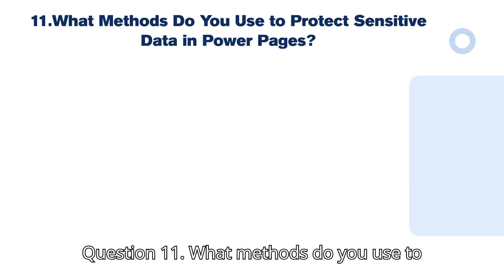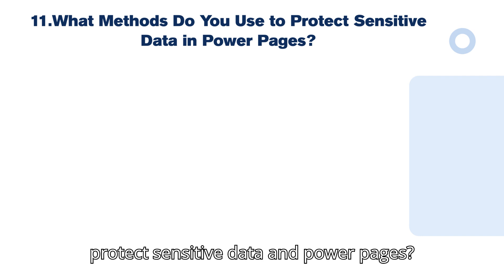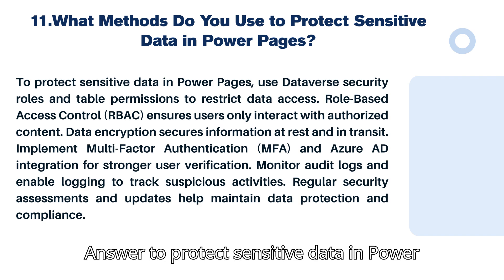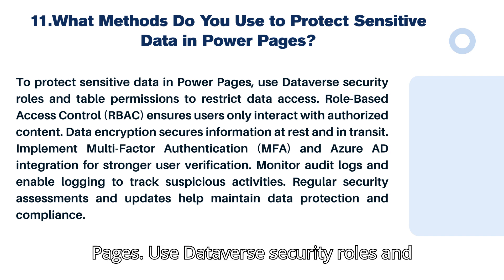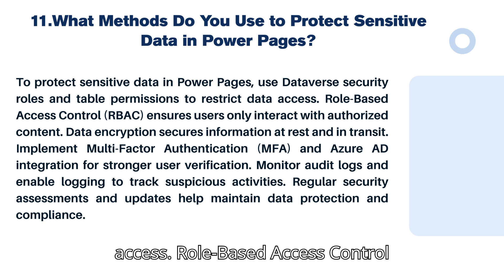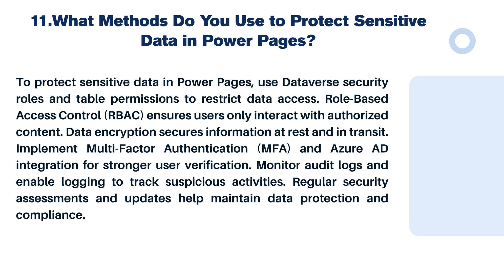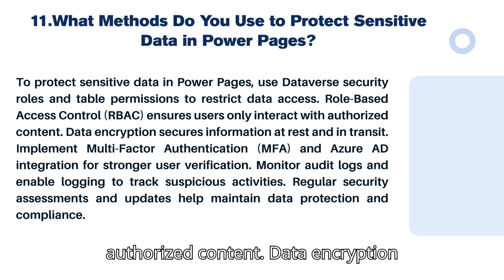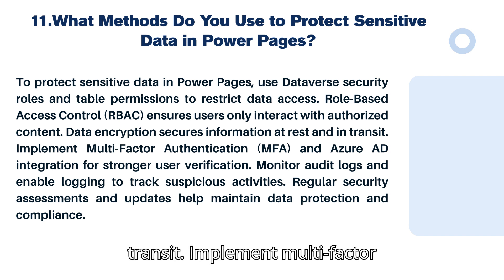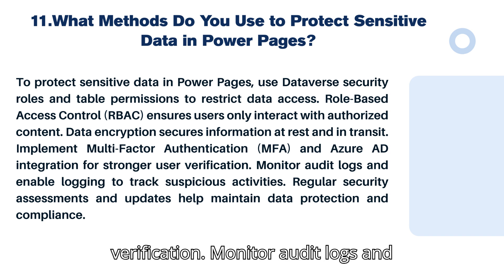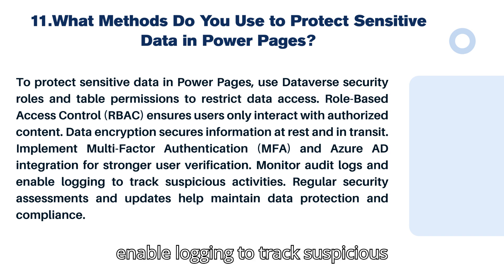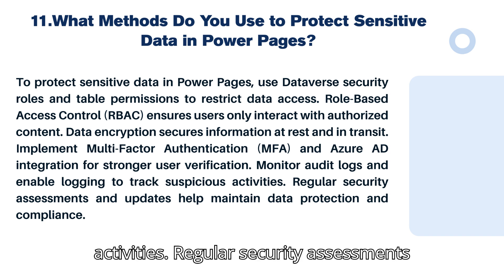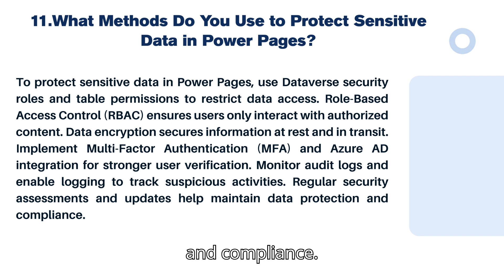Question 11: What methods do you use to protect sensitive data in Power Pages? Use Dataverse security roles and table permissions to restrict data access. Role-based access control ensures users only interact with authorized content. Data encryption secures information at rest and in transit. Implement multi-factor authentication (MFA) and Azure AD integration for stronger user verification. Monitor audit logs and enable logging to track suspicious activities. Regular security assessments and updates help maintain data protection and compliance.